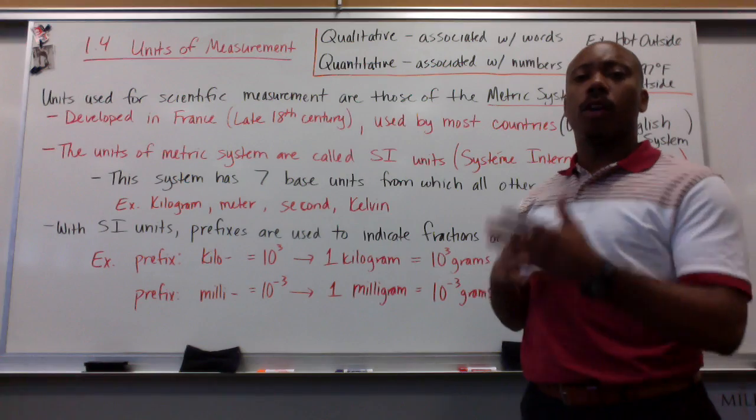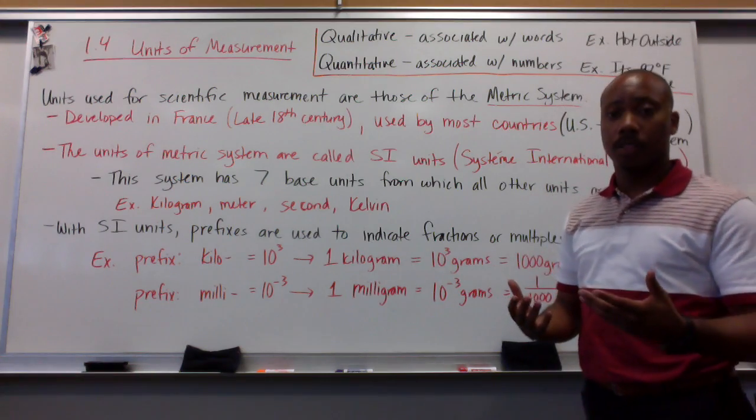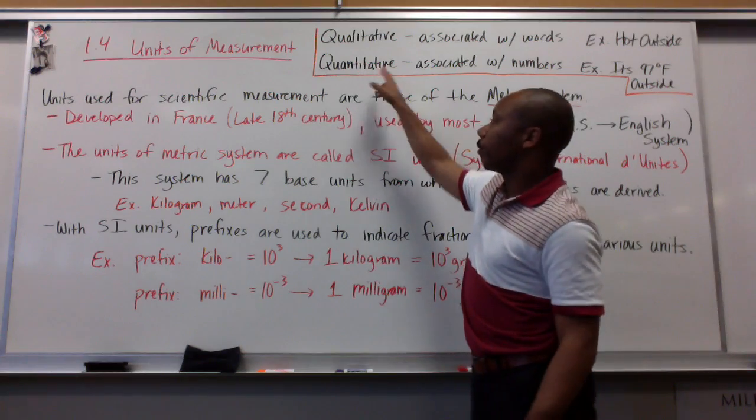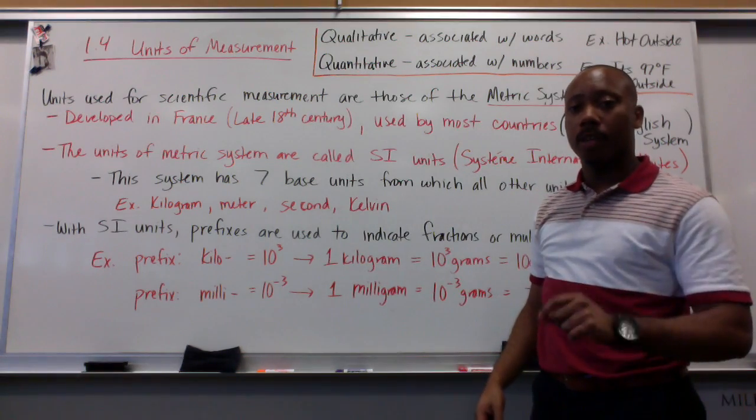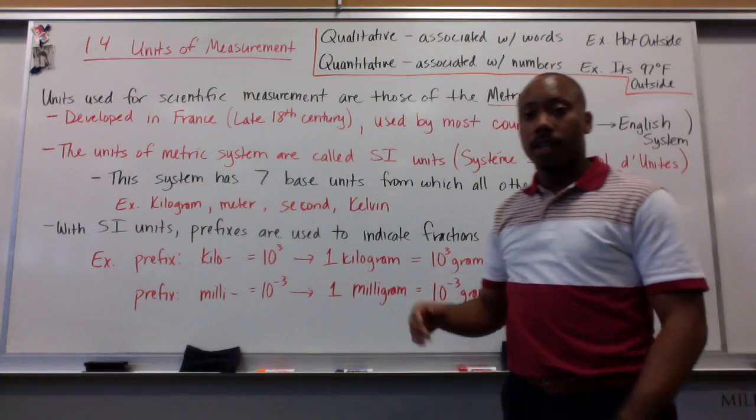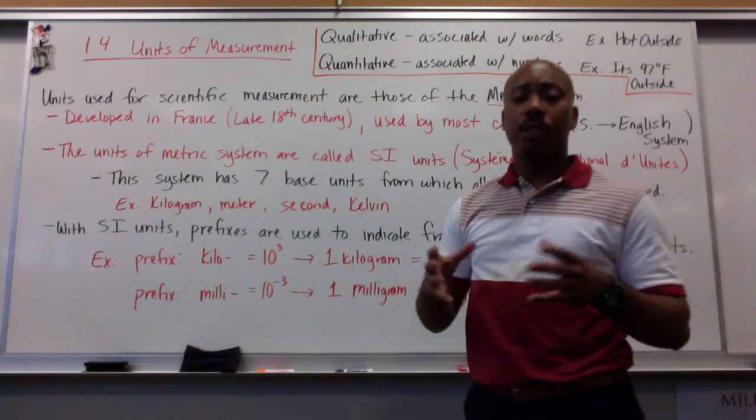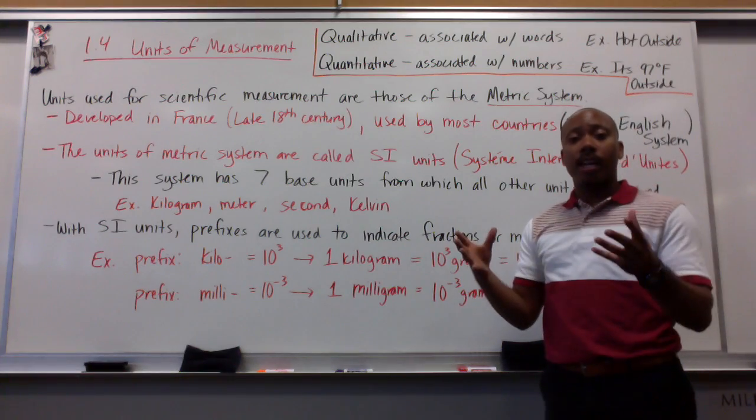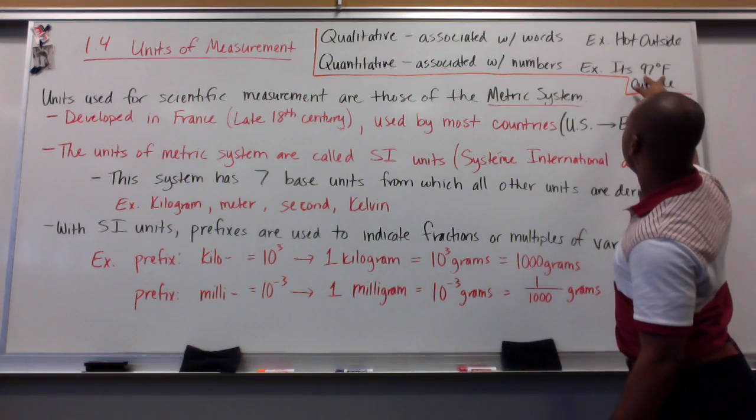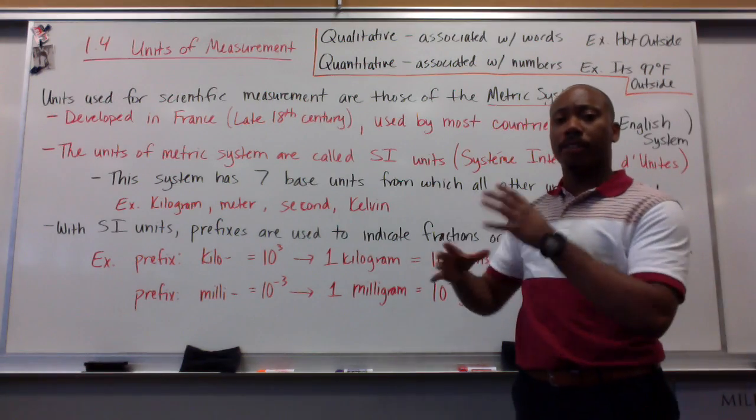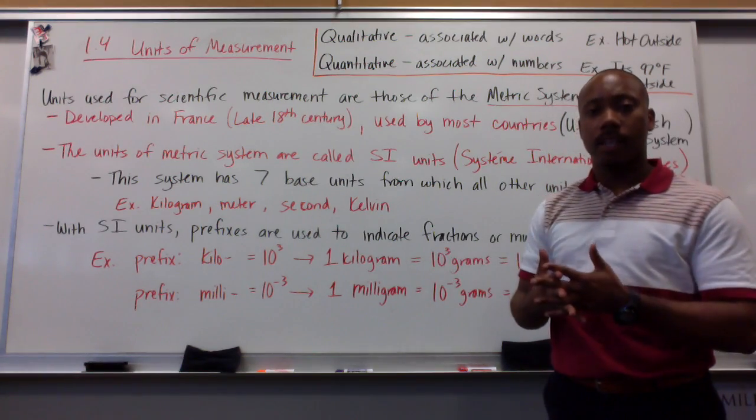That's taking a qualitative measurement of the temperature outside. The other type of scientific measurement is a quantitative measurement, which is associated with numbers. And the example is, it's 97 degrees Fahrenheit outside. I'm still saying it's hot outside, but I'm putting in the quantitative aspect of a number there. So, those are the two major types of measurements in science.